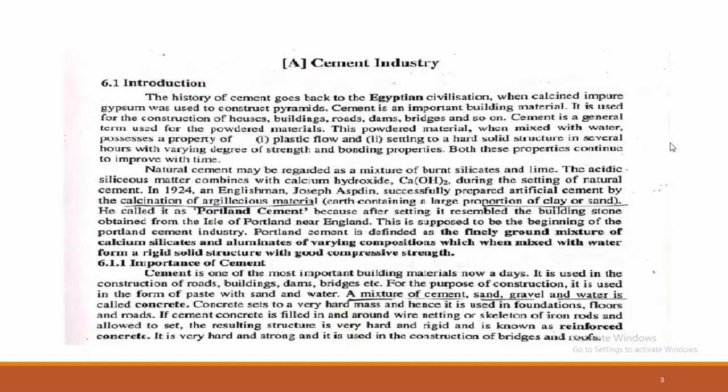This whole chapter has two sections: cement industry and the glass industry. We start with the cement industry. As we know, the history of cement goes back to the Egyptian civilization when calcinated impure gypsum was used to construct pyramids. Cement is an important building material used for the construction of houses, buildings, roads, dams, bridges, and so on. In ancient years, for any construction, clay — as an artificial cement material — was used for the construction of buildings.